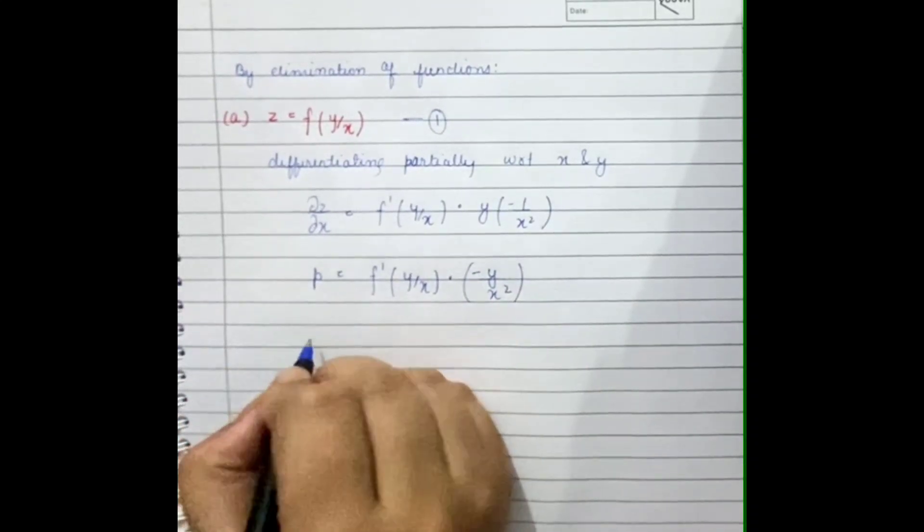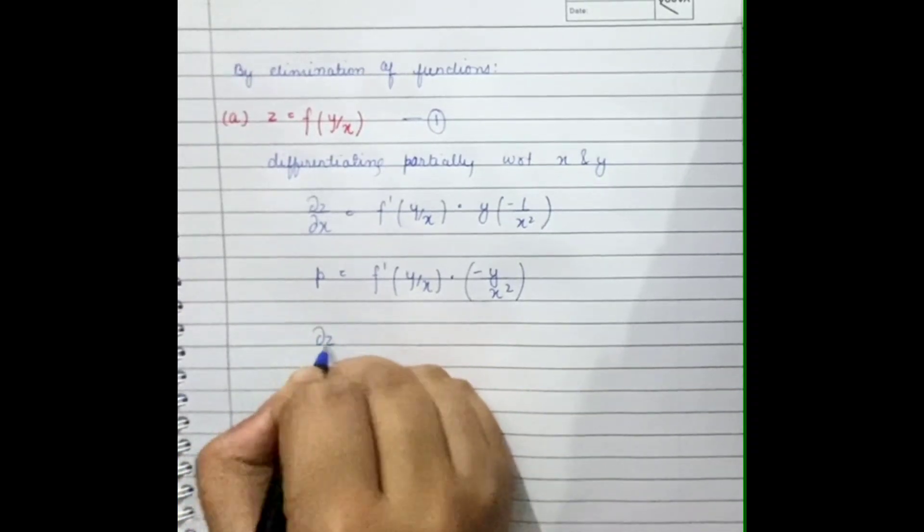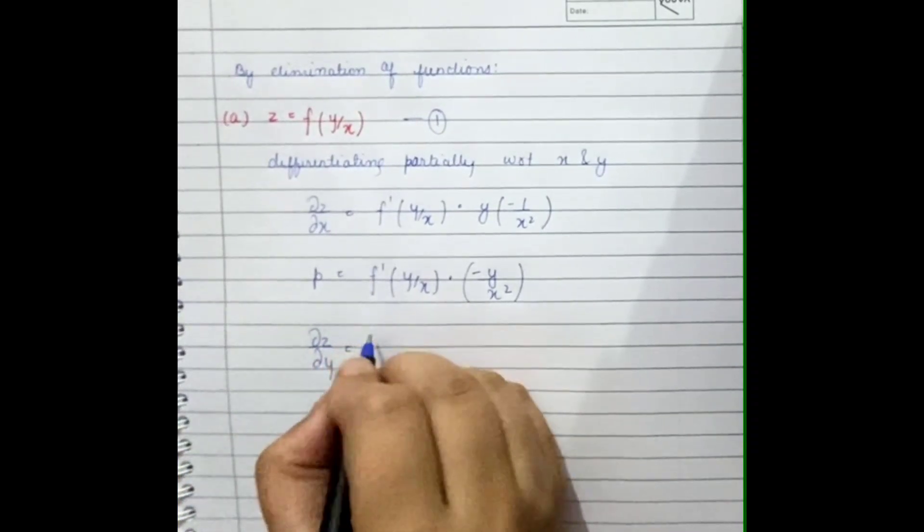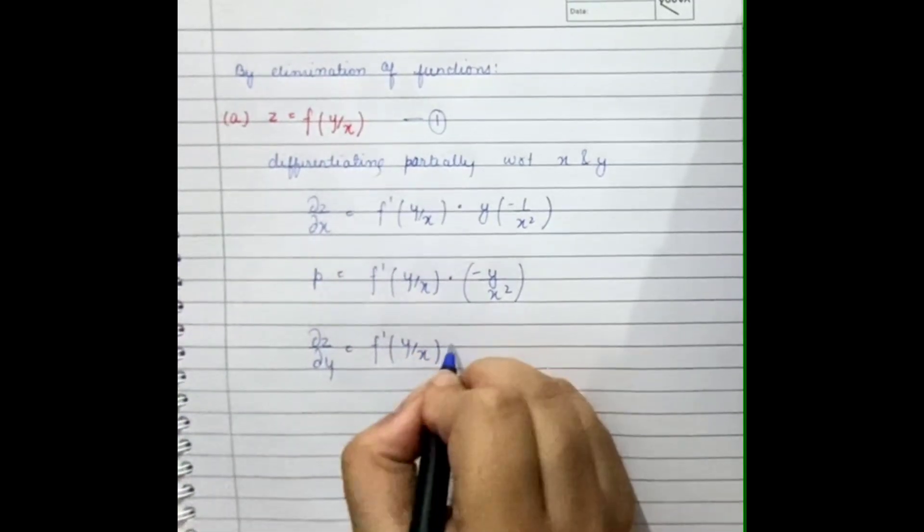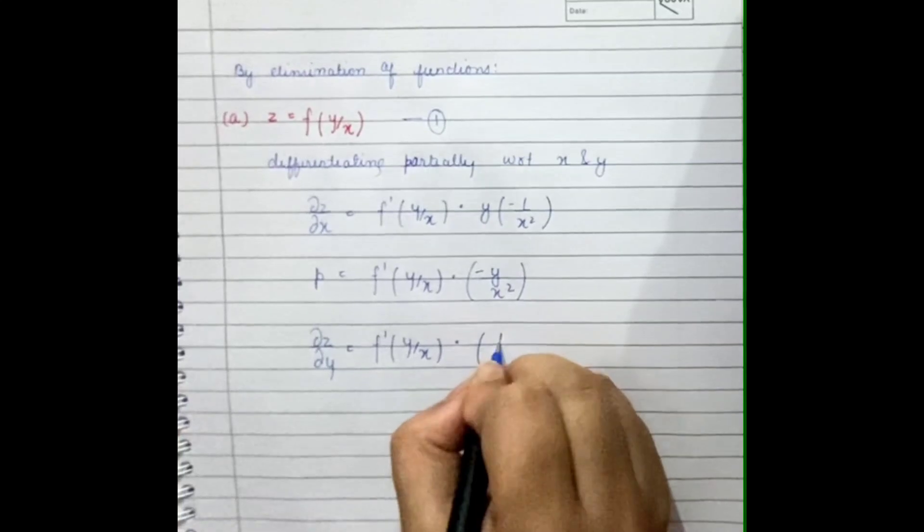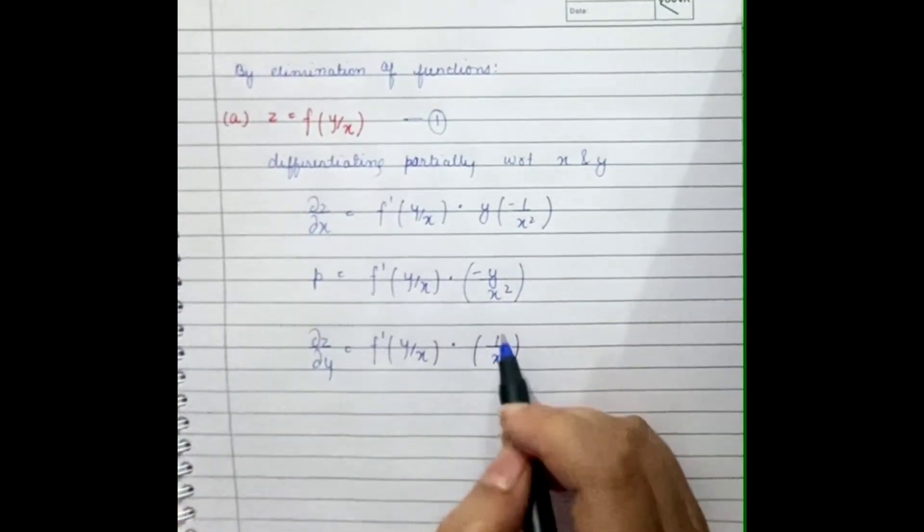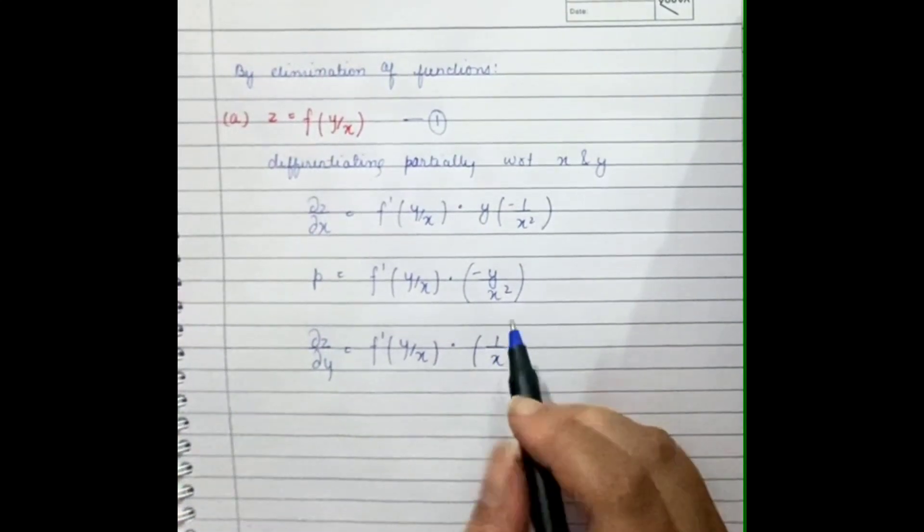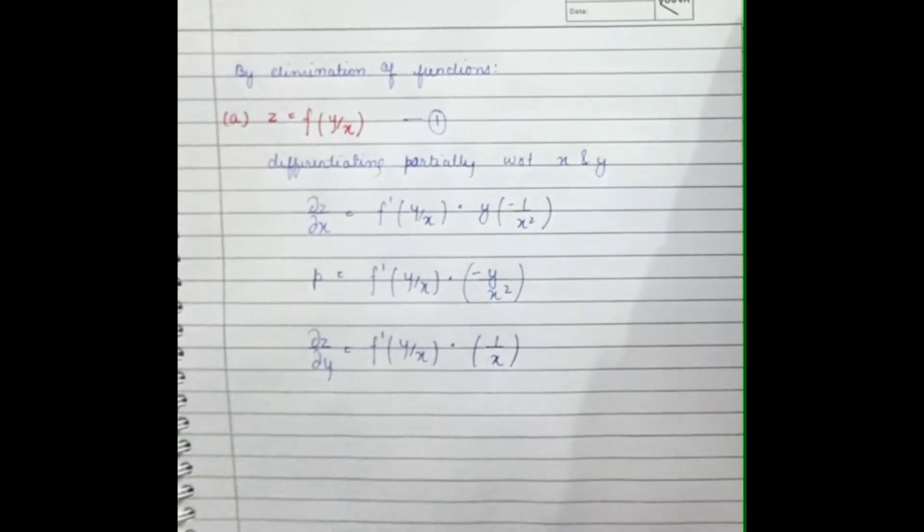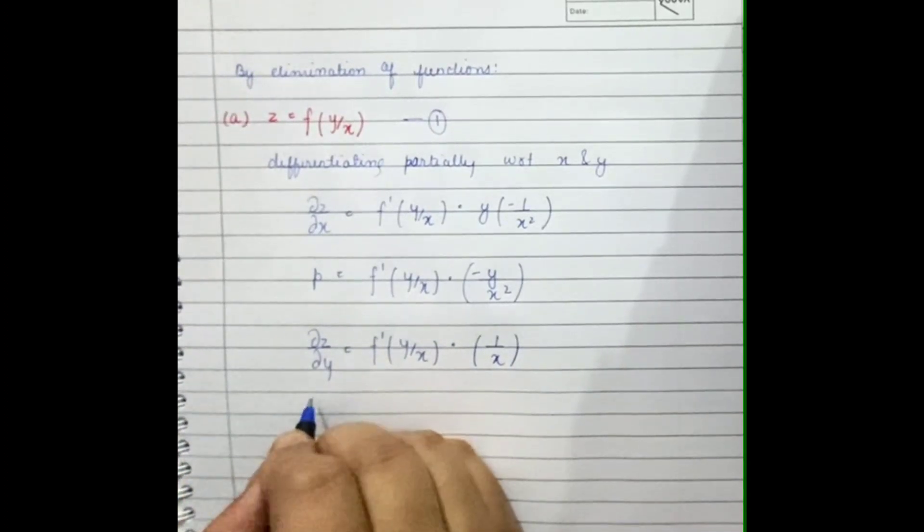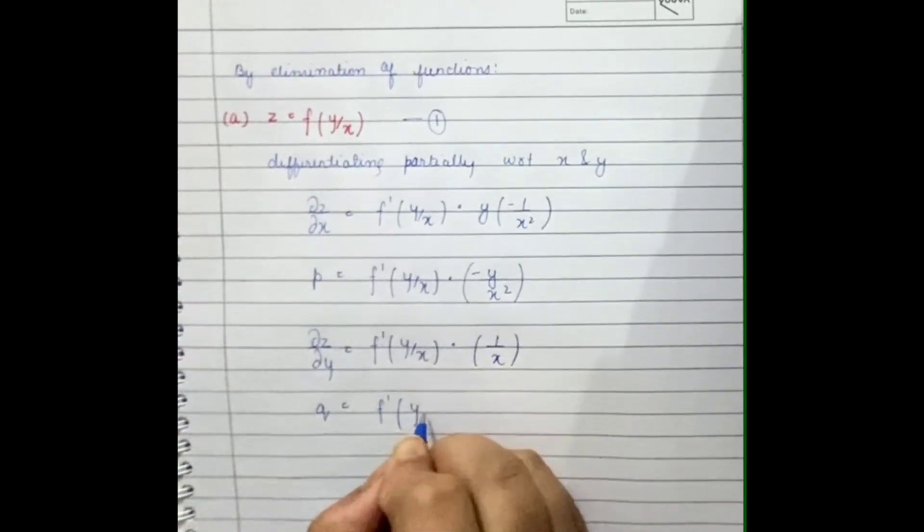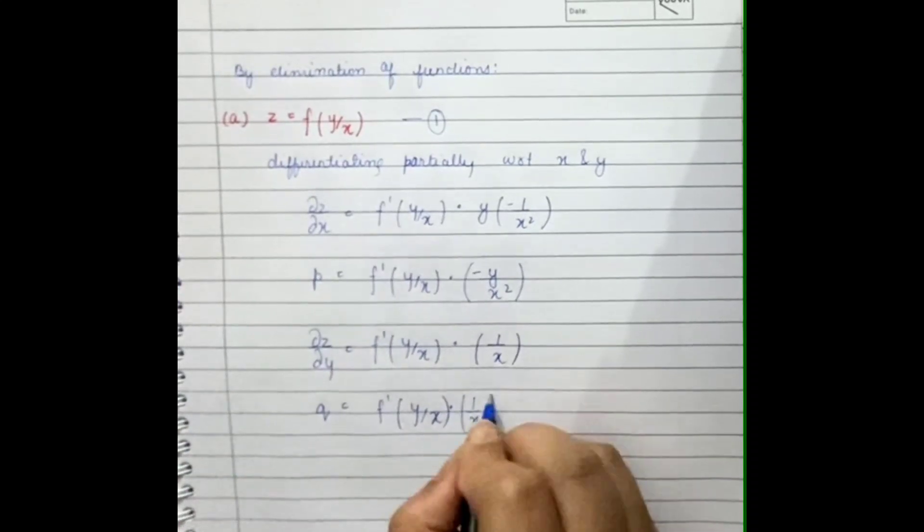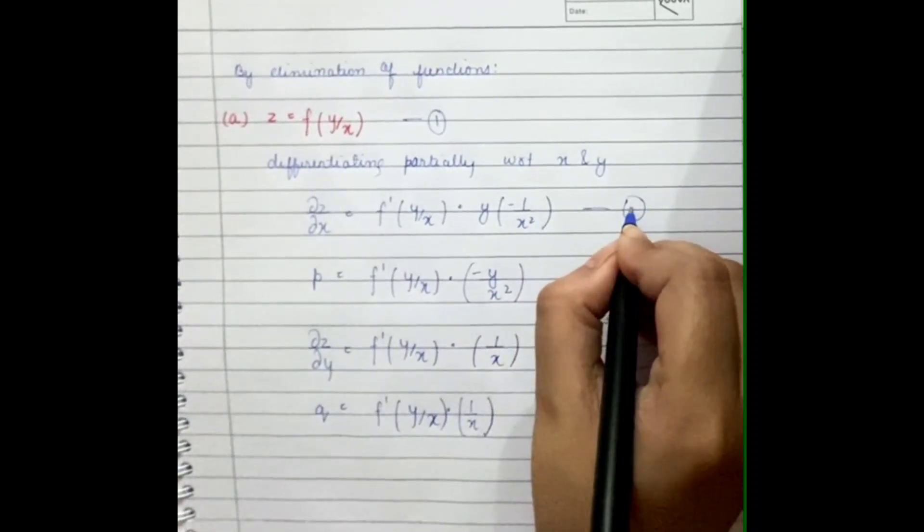Now for the y term, del z by del y will be equal to f dash y by x into 1 by x, as y will be differentiated and x will be treated as a constant. So the q term here will be f dash y by x into 1 by x, taking this as equation two.